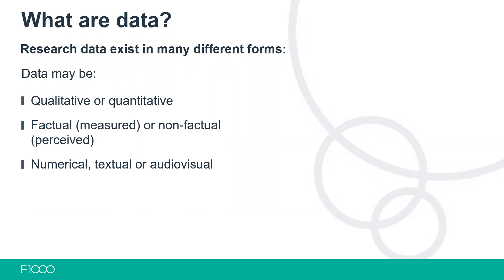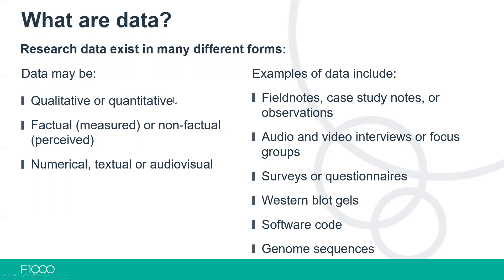Data is a very broad term — it means any material the author uses to support their study, whether they created it themselves or found it elsewhere. Data can be qualitative or quantitative, factual or non-factual. It can be numerical like Excel spreadsheets, textual like Word documents, or audio-visual like a video or interview recording. Examples of data span a wide range: field notes in anthropology, audio and video interviews in social science, surveys or questionnaires for psychology or political science, western blot gels for microbiology, software code for ICT, and genome sequences for bioinformatics — all of these are data.